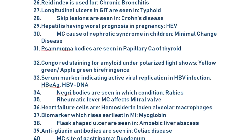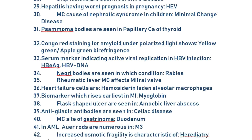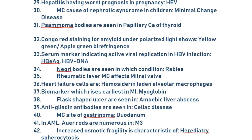Most common cause of nephrotic syndrome in children is minimal change disease. Psammoma bodies are seen in papillary carcinoma of the thyroid. Congo red staining for amyloid under polarized light shows apple-green birefringence. Serum markers indicating active viral replication in HBV infection are HBe antigen and HBV DNA — when you have the DNA it indicates active infection, and HBe antigen also shows active infection.